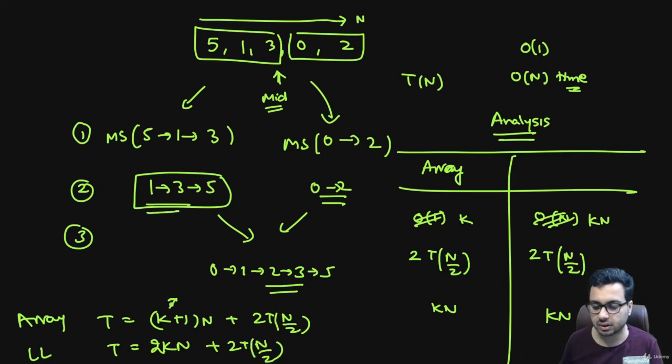You can carefully see this term is a constant, this term is a constant. If you solve this recurrence it will give you O(n log n), and similarly if you solve this recurrence, this will also give you O(n log n).